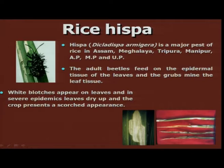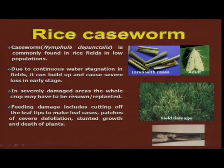Another pest, a sporadic and localized one, is rice hispa, Dicladispa armigera, particularly a major pest in hill area paddy in Assam and Meghalaya. Here both adults as well as the grubs mine into the leaf and scrape the chlorophyll content. Because of this, we see white blotches all along the leaves.